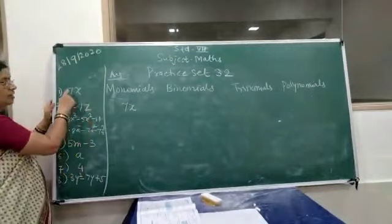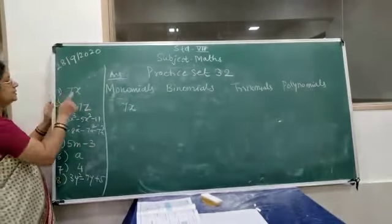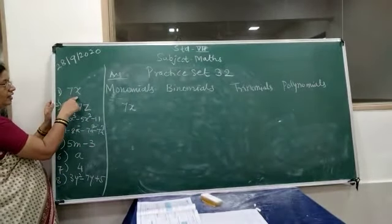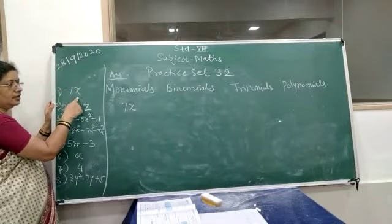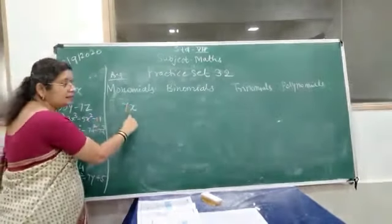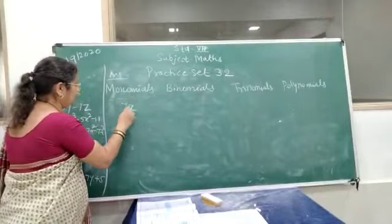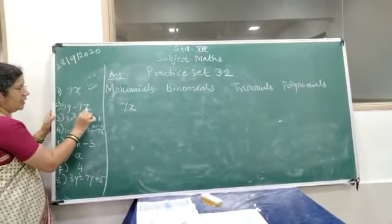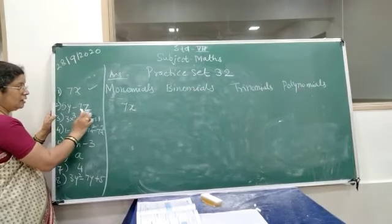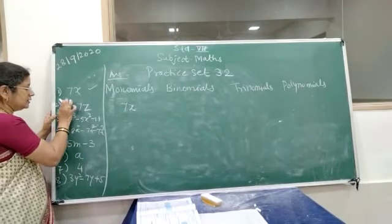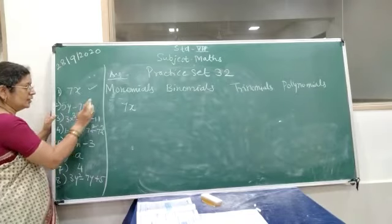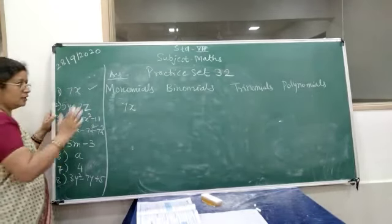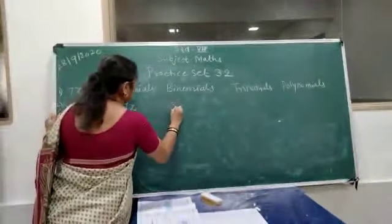Now we will see one by one example. This is what is your exercise. In this first one is 7x. Now how many terms are there in this? One term. So it will come under monomial. Now if you see second one, 5y minus 7z. Here how many terms are there? This is one term. This is another term. So two terms are there. So it will come under binomial.